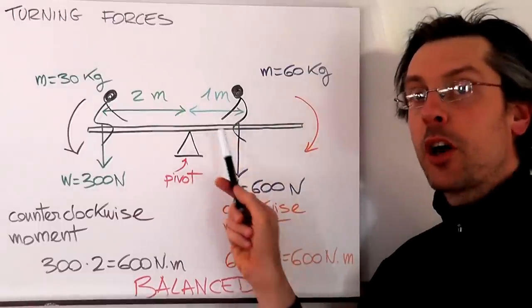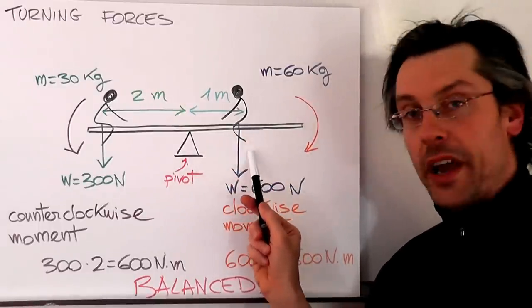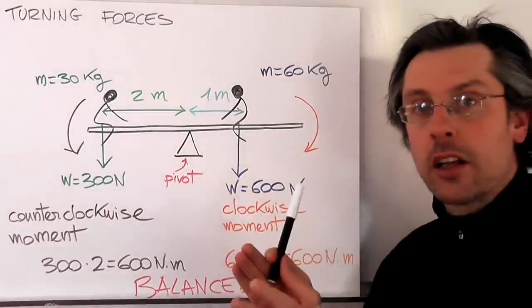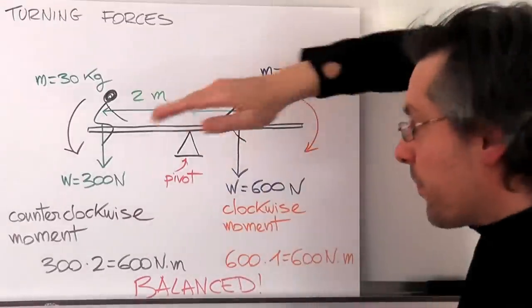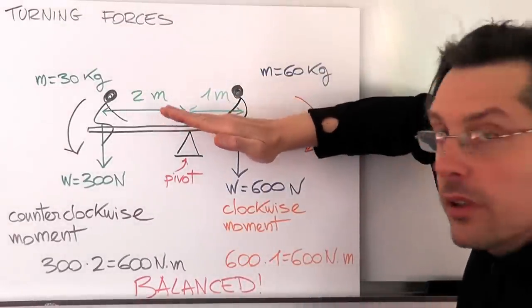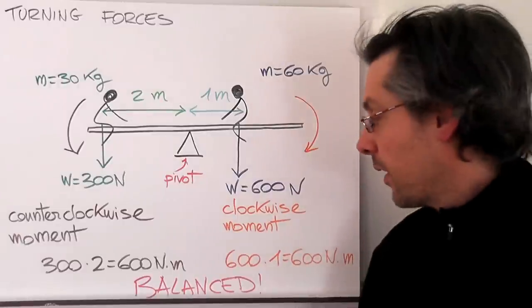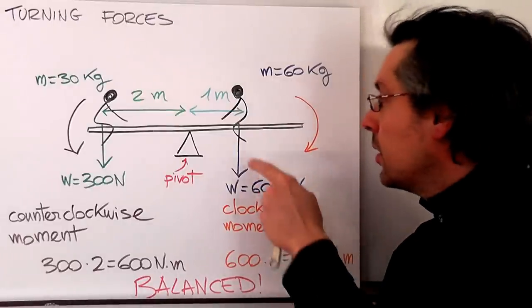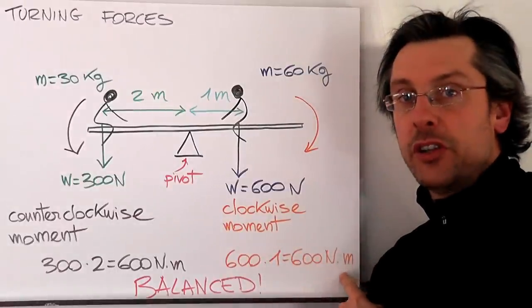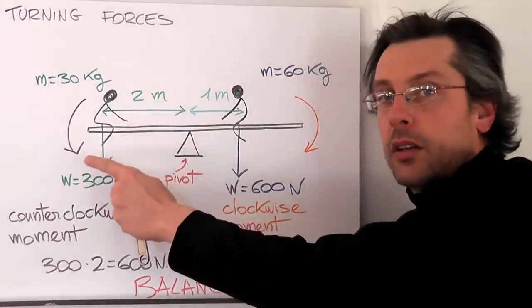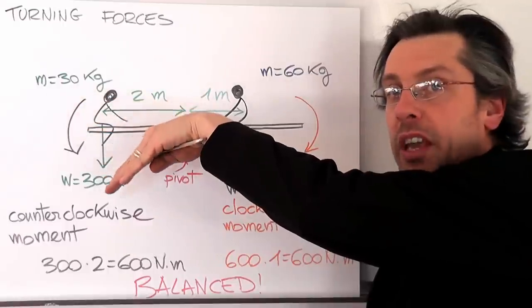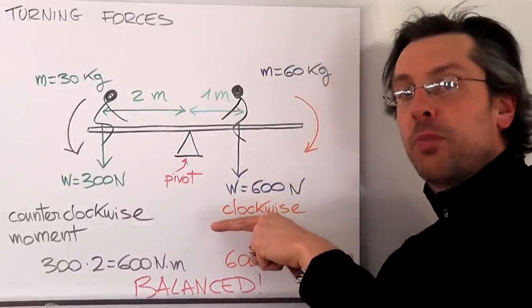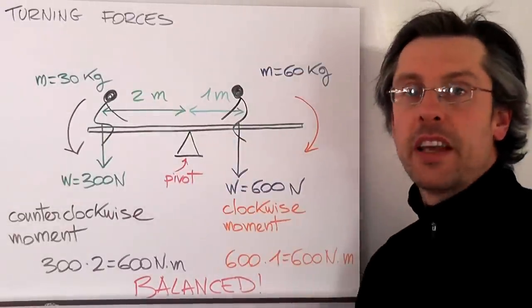And now when we calculate the torque applied by his weight on the seesaw, we're going to find the clockwise moment. Again, why clockwise? Because if we had this kid alone, the seesaw will move in a clockwise direction. And if we do our math, we see this is 600 times 1, that makes 600 Newton per meter. We have exactly the same torque but going the opposite direction, and the seesaw is balanced.